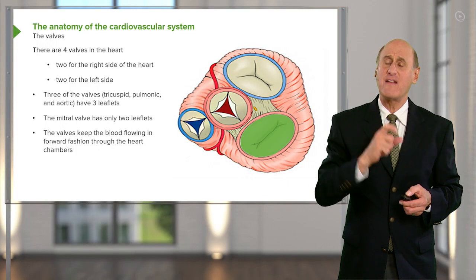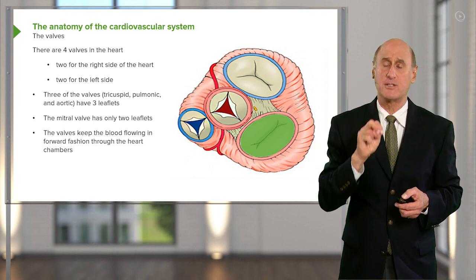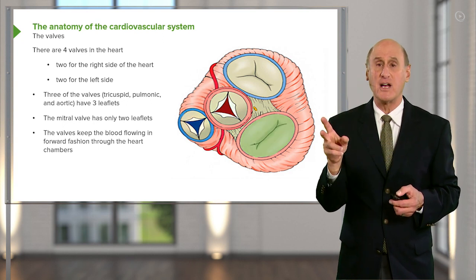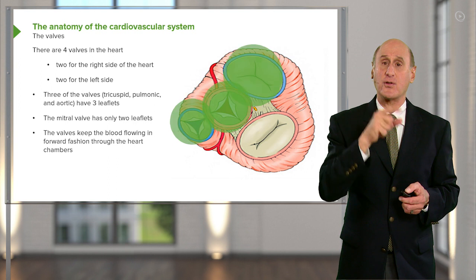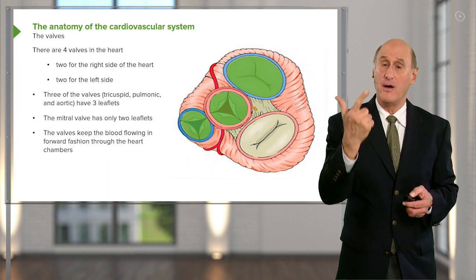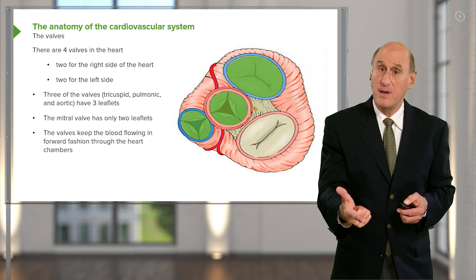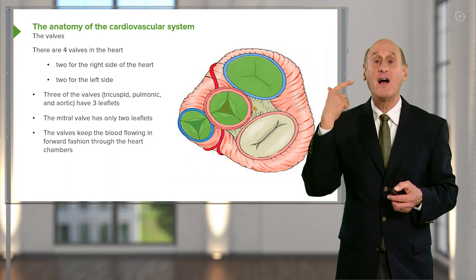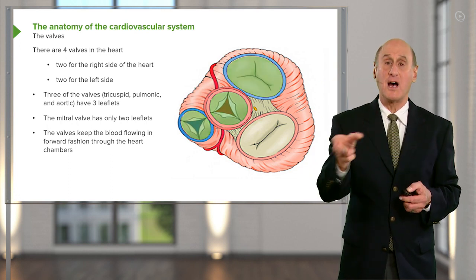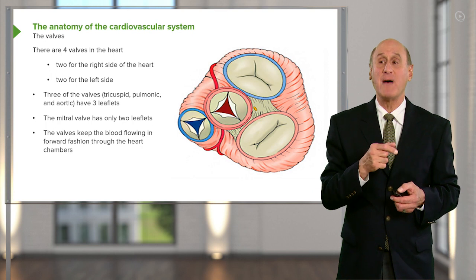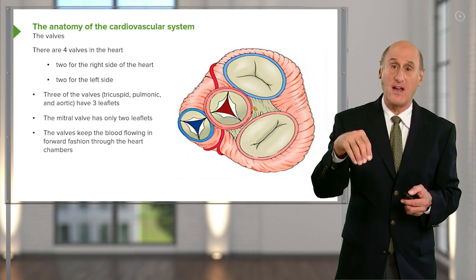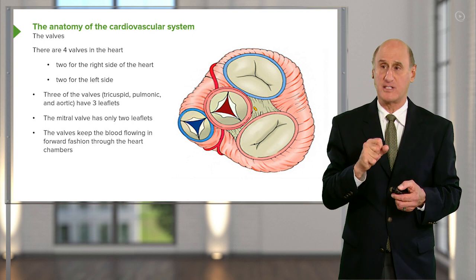Notice that valve only has two cusps. So it is the only valve with two cusps. The other three valves have three cusps — the tricuspid valve, the pulmonic or pulmonary valve, the aortic valve all have three cusps. But the mitral valve, which is between the left atrium and the left ventricle, has only two cusps.